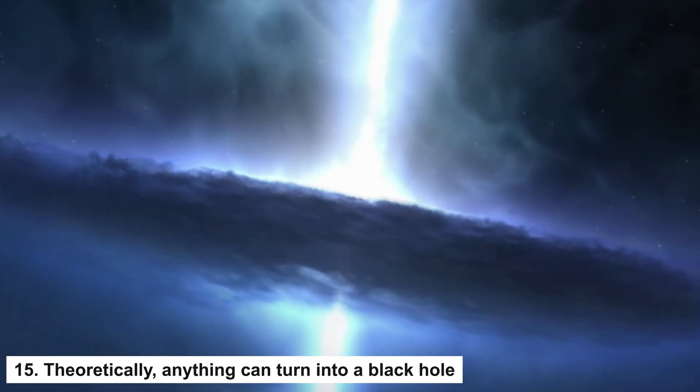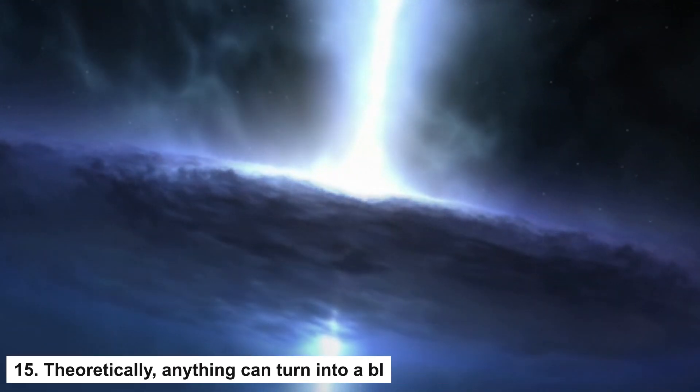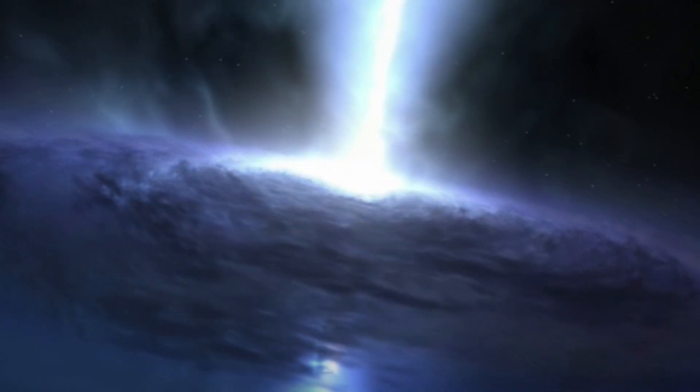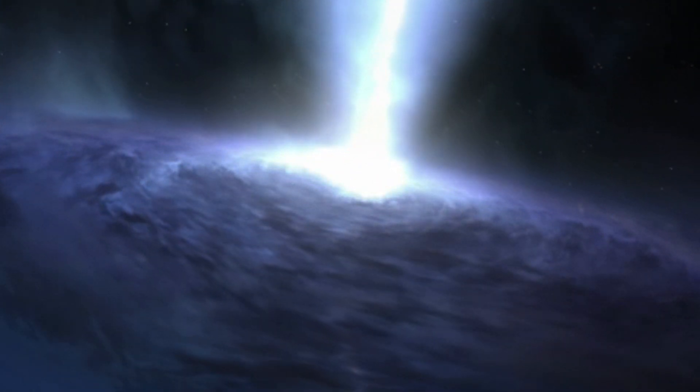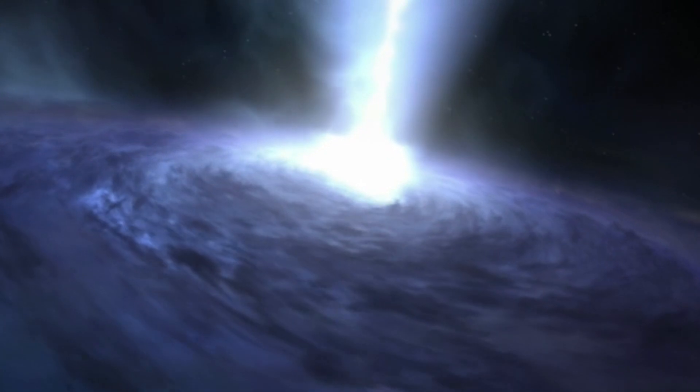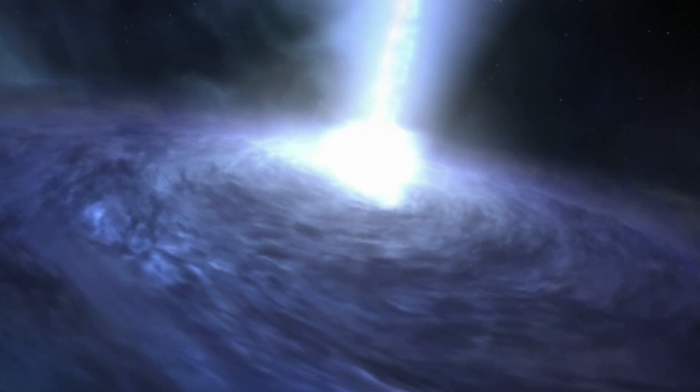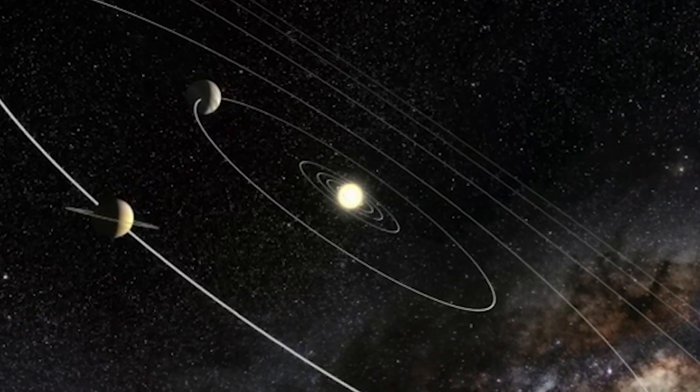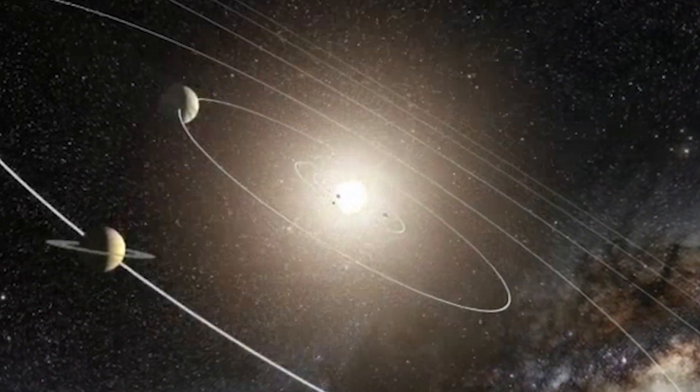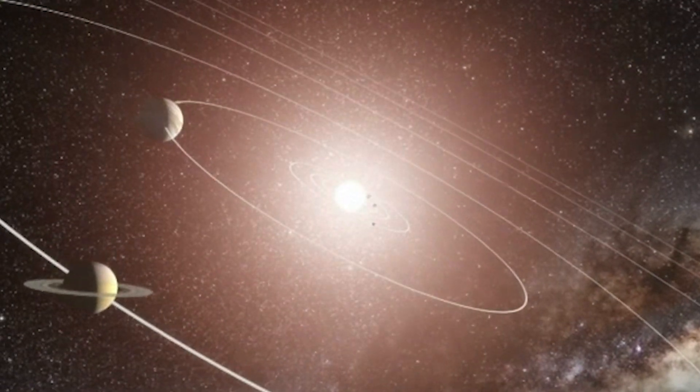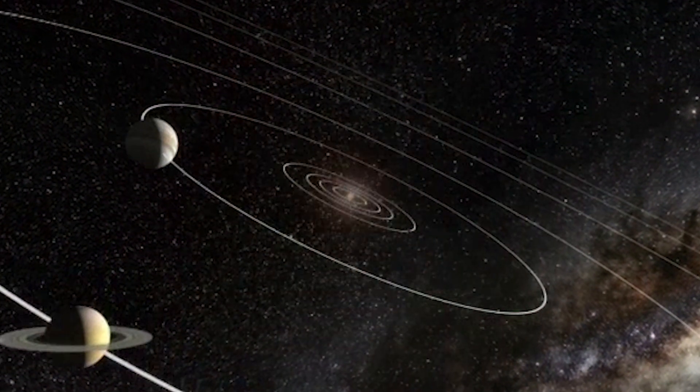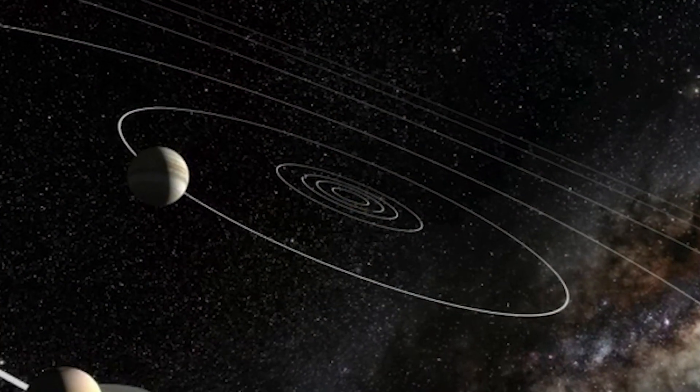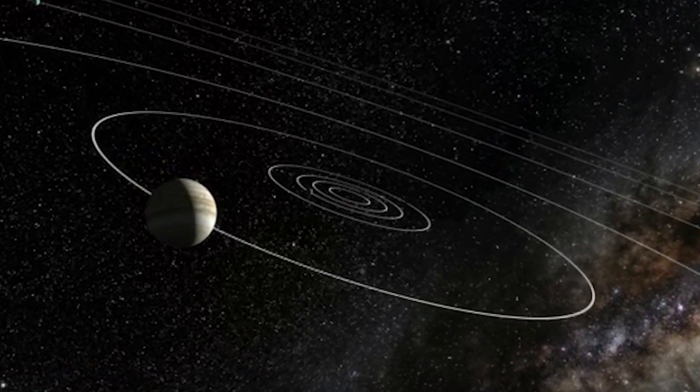Number 15: Theoretically, anything can turn into a black hole. Our current understanding of physics shows that anything can turn into a black hole if you could make something small enough. All that compressed matter would become extremely dense, resulting in a black hole. We now know that black holes are formed by gravitational collapse of stars about 20 to 30 times more massive than our sun. According to the Space Telescope Science Institute, about one in every thousand stars is big enough to be a black hole.